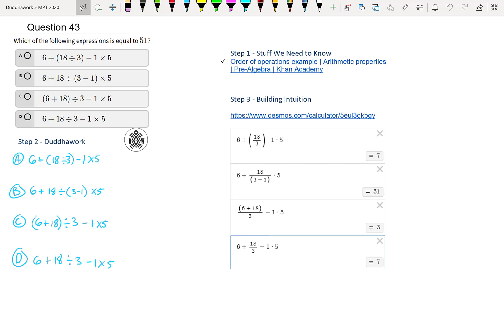We're asked which of the following expressions is equal to 51. And we have a bunch of expressions like 6 plus brackets 18 divided by 3 minus 1 times 5. And we need to check each one of them to find one that's equal to 51. So the first step to doing any problems is to know the theory behind it.